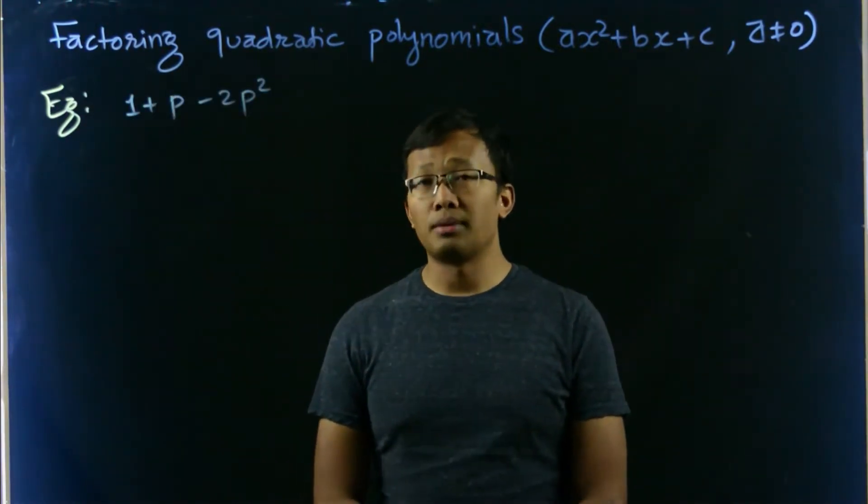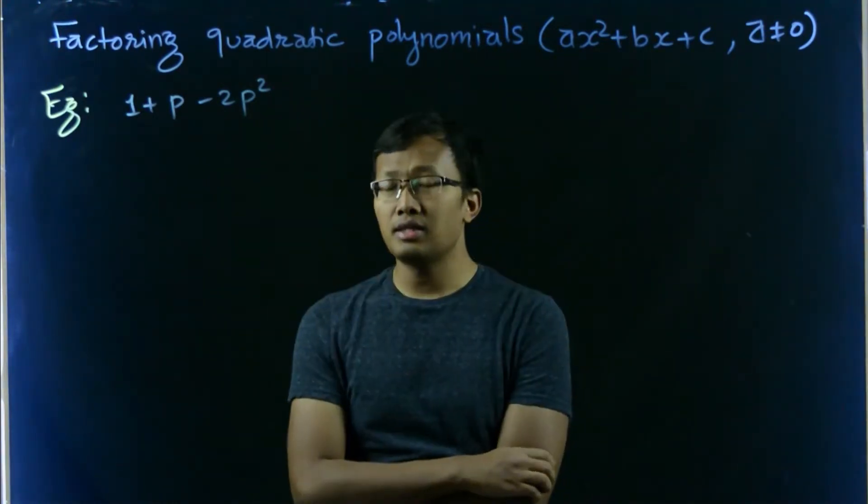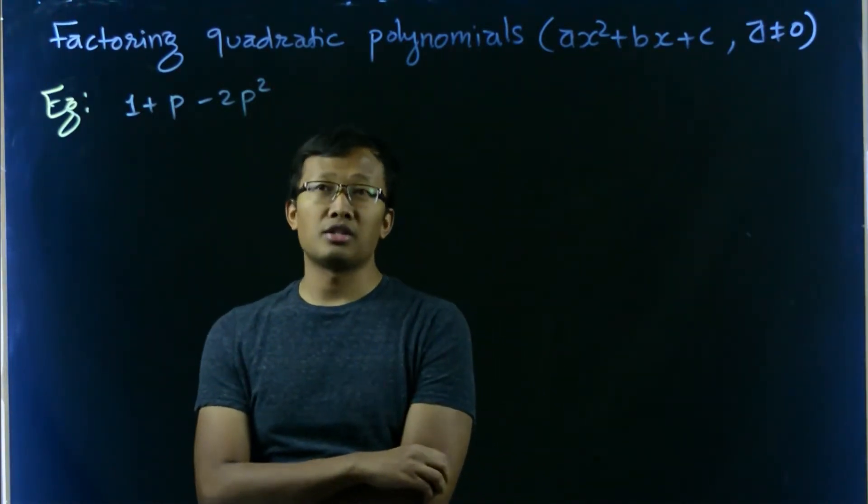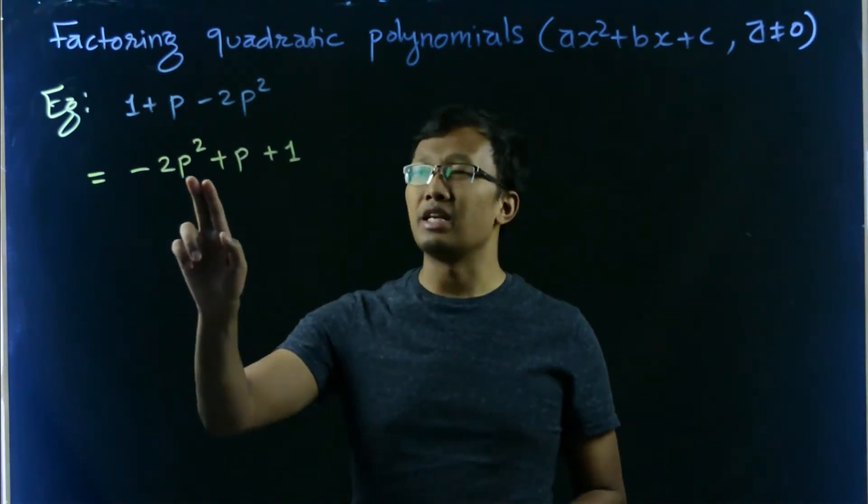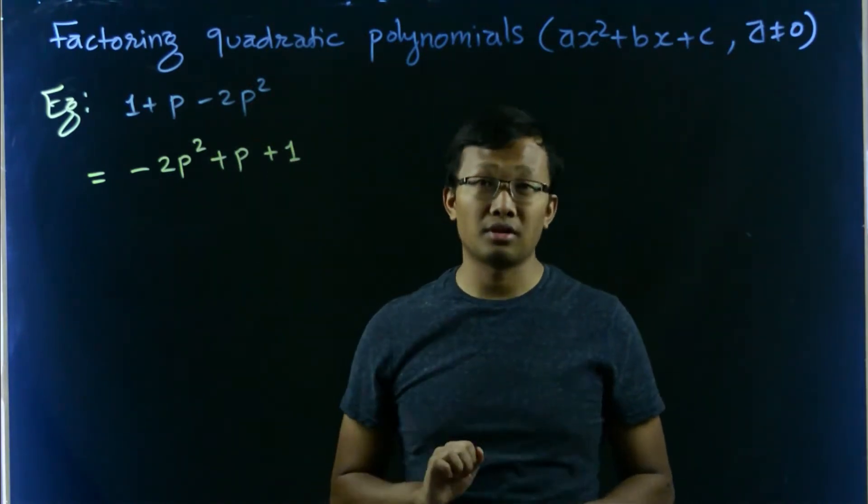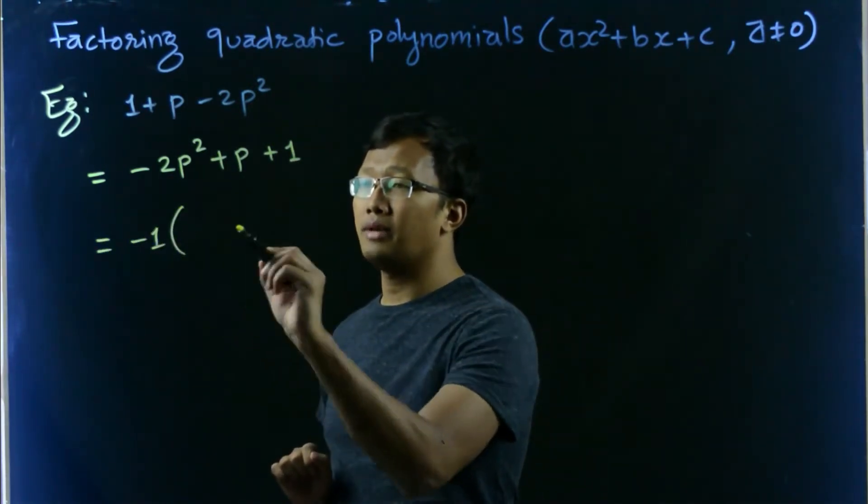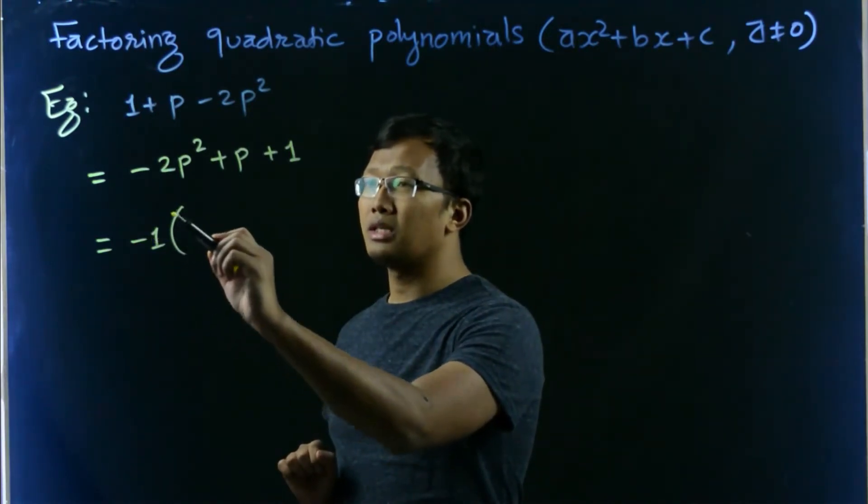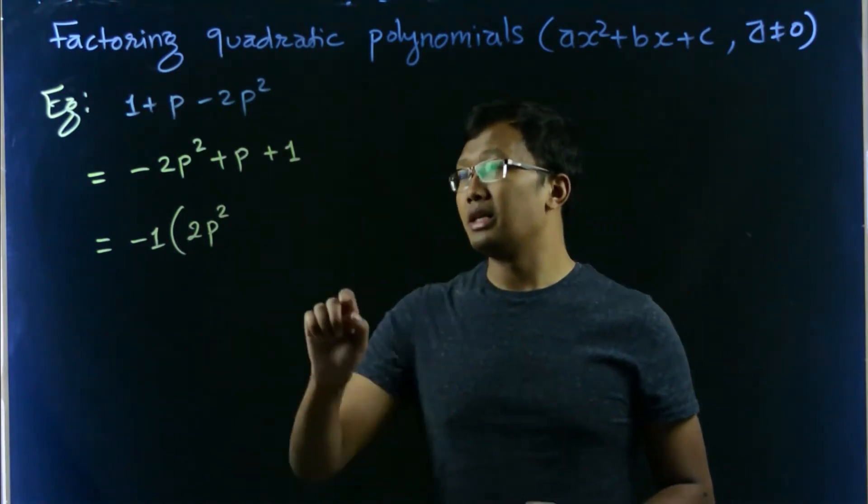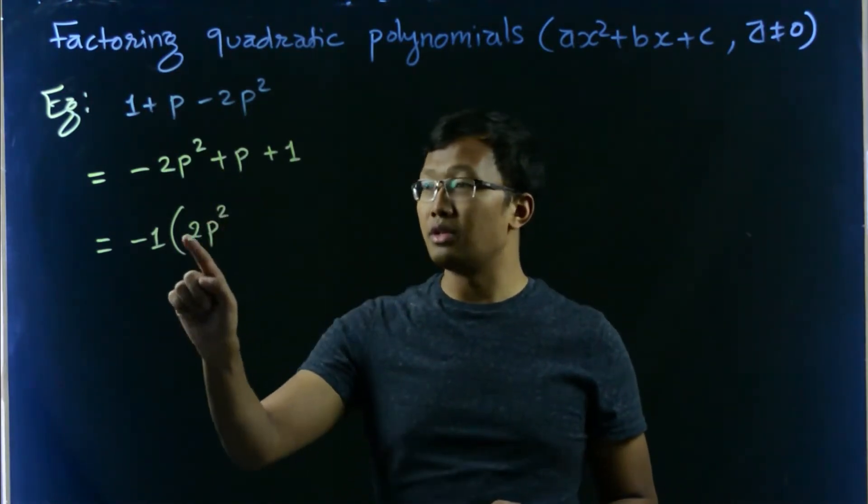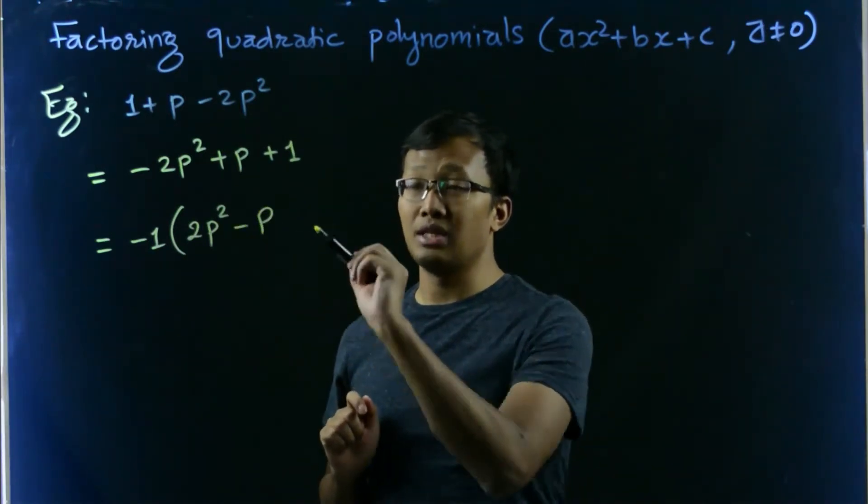Let's take another problem which is 1 plus p minus 2p squared. In this case, first we arrange the terms in descending order. Let us take negative 1 common from all of those three terms. That will give us negative 1. So negative 1 times 2p squared is negative 2p squared. Similarly, since we have positive, negative 1 times negative 1 will be positive, so that's why we write negative p in here.